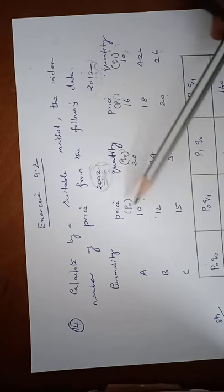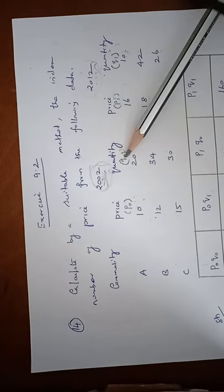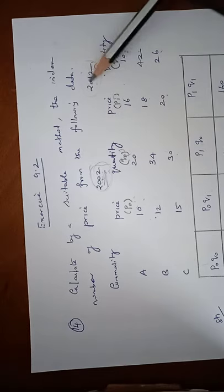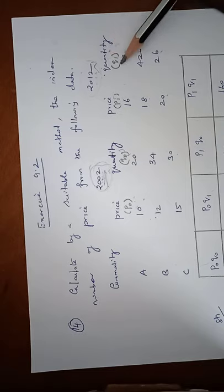So the base year price can be taken as P0, base year quantity is taken as Q0, and current year price is taken as P1, current year quantity is taken as Q1.